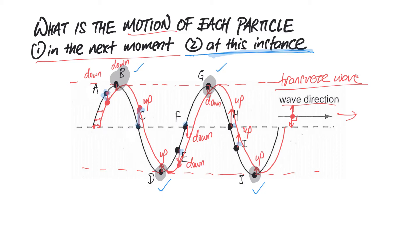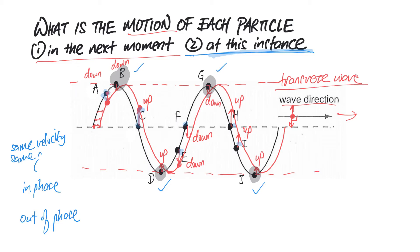Another thing they can ask is to find two particles that are in phase. In phase means both particles have the same velocity — the same speed in the same direction — or equivalently, the same displacement relative to the reference point. For example, B and G are in phase, and D and J are in phase, because they are always moving in the same direction at the same speed.